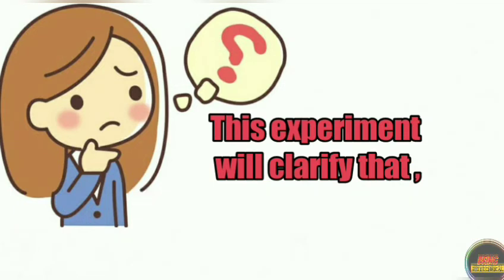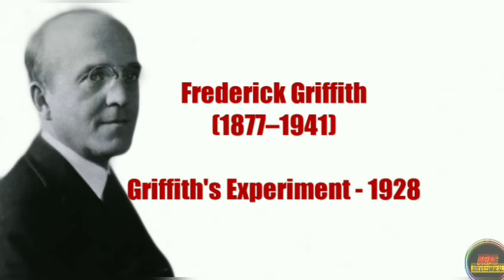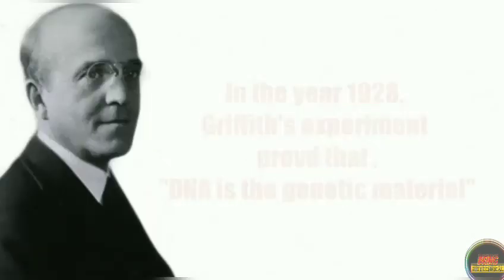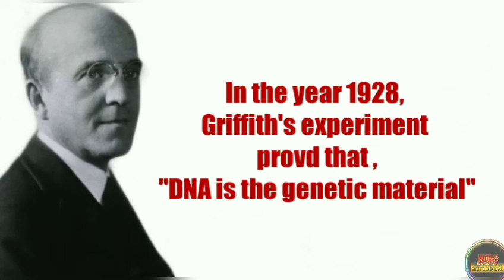This experiment was made by a scientist named Frederick Griffith in the year 1928. Before 1928, there was a big confusion — some people used to think that DNA is the genetic material while others used to think that protein is the genetic material. There was a big conflict, but nobody had proof to justify their claims. In 1928, Frederick Griffith experimented on this and proved that DNA is the genetic material, and that is why this experiment is known as Griffith's experiment.